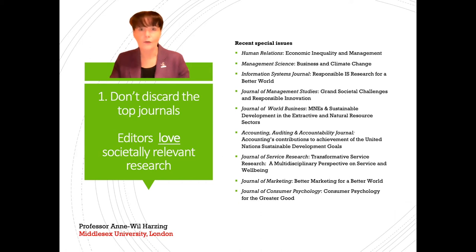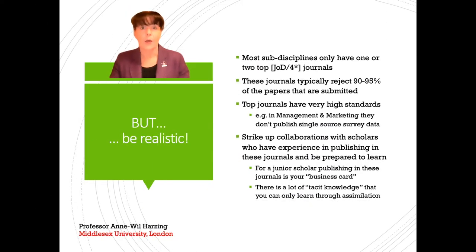Top journals' editors love societally significant research — have a look at recent special issues in top business and management journals, all covering topics of huge societal relevance. But be realistic: most sub-disciplines only have one or two top journals with very high rejection rates. For example, top journals typically won't publish research using single source data. To publish in these journals, consider collaborating with academics who've already published there, as there's a lot of tacit knowledge best learned through that collaboration.